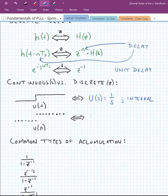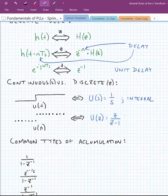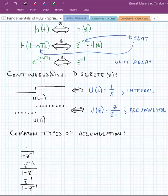Conversely, the discrete time unit step we just found has a z-transform. It's equal to z divided by z minus 1. This is commonly known as an accumulator. Accumulators are discrete time integrators.